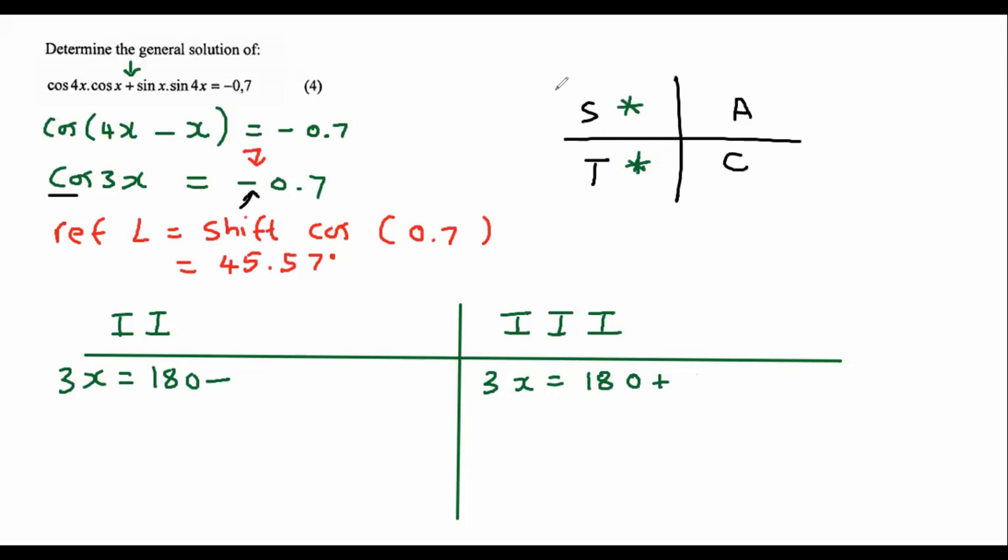In quadrant 2, we always say 180 minus. In quadrant 3, we always say 180 plus. Now we put the reference angle that we found, which was 45.57. And then you must just remember to say that whole boring part of plus k times 360, k is an element of z. Your teacher might use the letter n instead of k. It doesn't really matter.